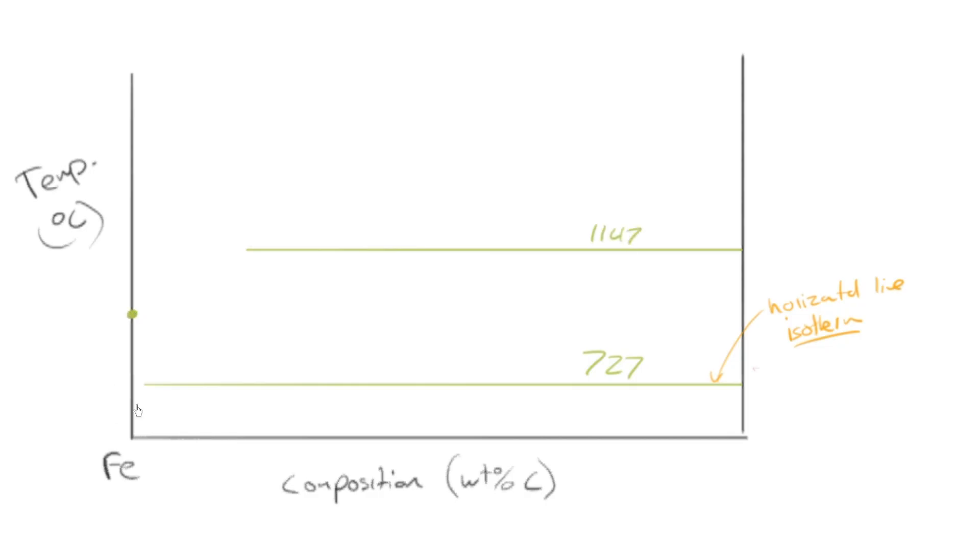There's a transformation that iron, pure iron, goes through at 912 degrees C. And it transforms from, we're going to see it as a body center cubic phase to a face center cubic phase. There's another isotherm up here we don't really worry too much about. And now watch this, without picking your pen up, you can actually draw the iron carbon phase diagram.